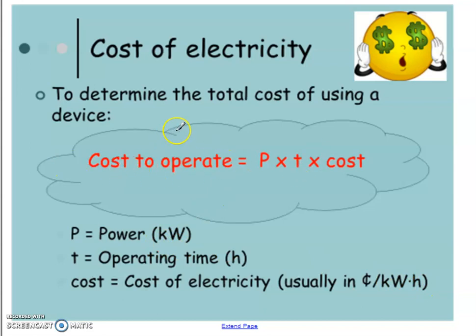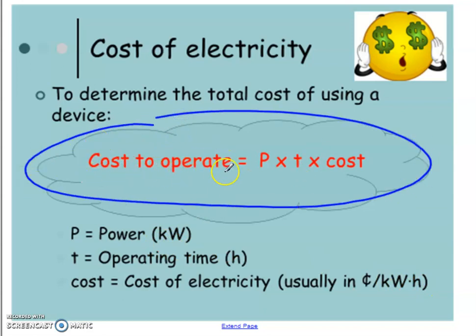So here's our formula. The cost to operate a particular load is the power times the time times the cost. But the units are important here. The power has to be in kilowatts, the time has to be in hours, and usually the cost is given in the question in cents per kilowatt hour.